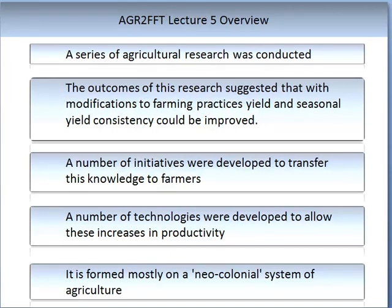The Green Revolution was based on a series of agricultural research conducted between 1940 and 1970. These experiments showed that modifications to farming practices could impact on yield, and seasonal yield would consistently improve. A number of initiatives were developed to transfer this knowledge to farmers. It wasn't one technology that resulted — it was a number of technologies brought together which resulted in increases in productivity. This is formed mostly on a neo-colonial system of agriculture.